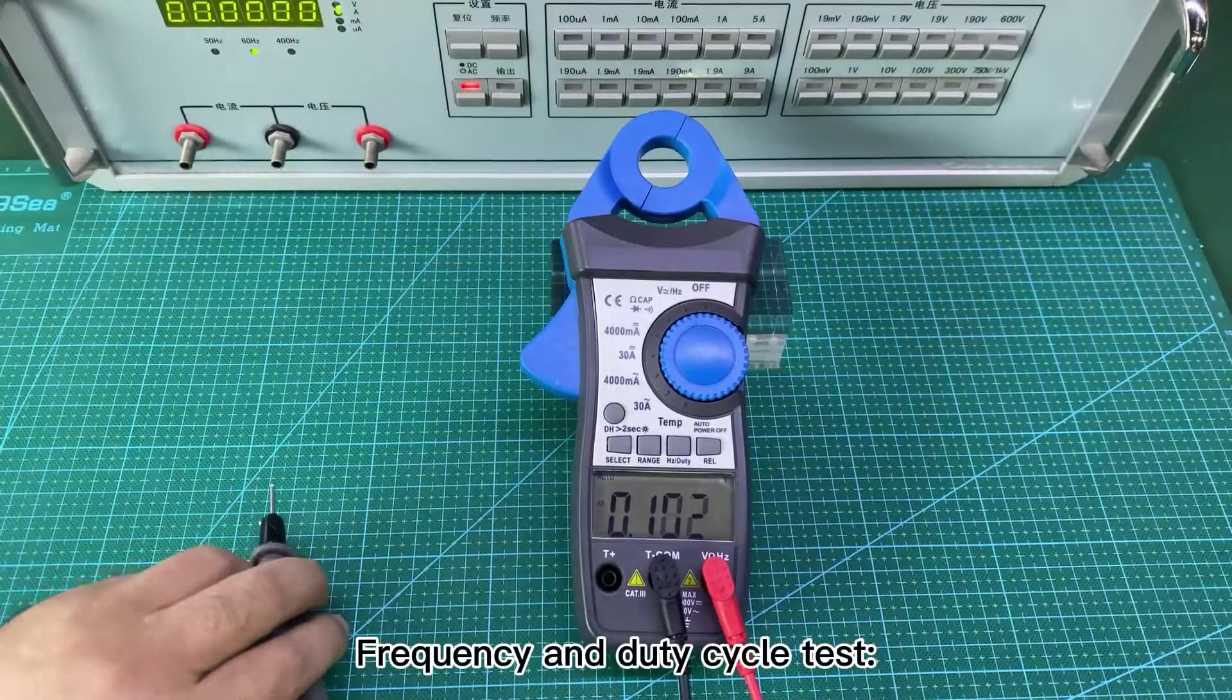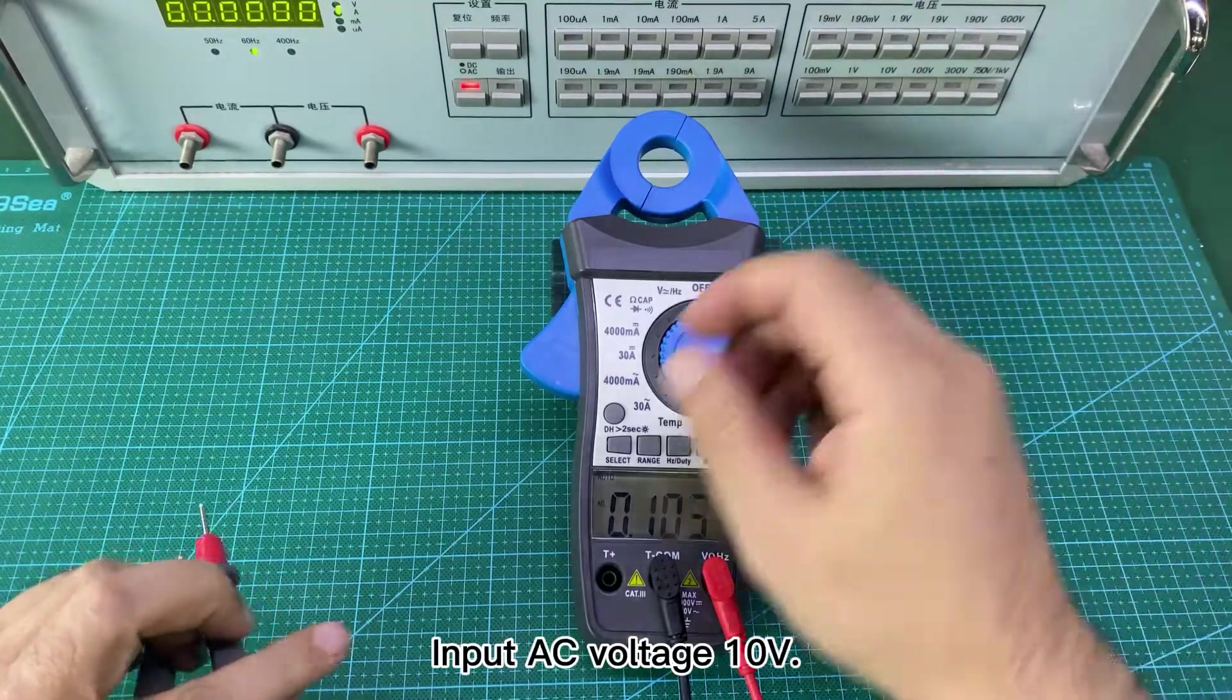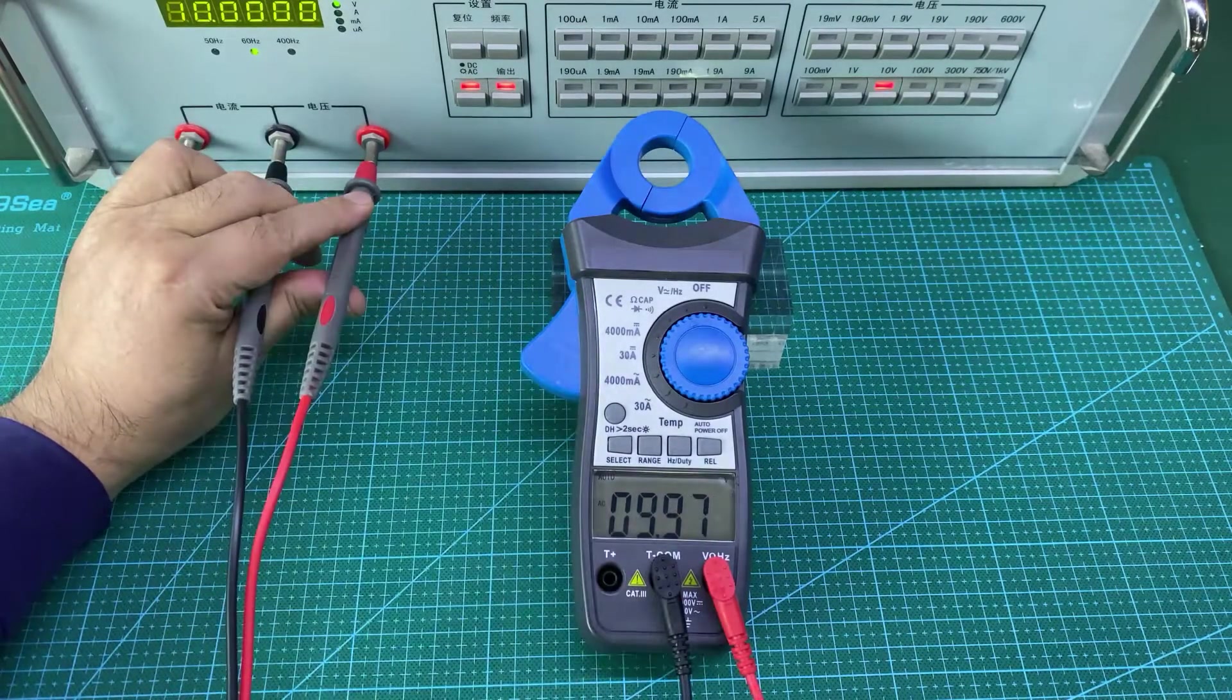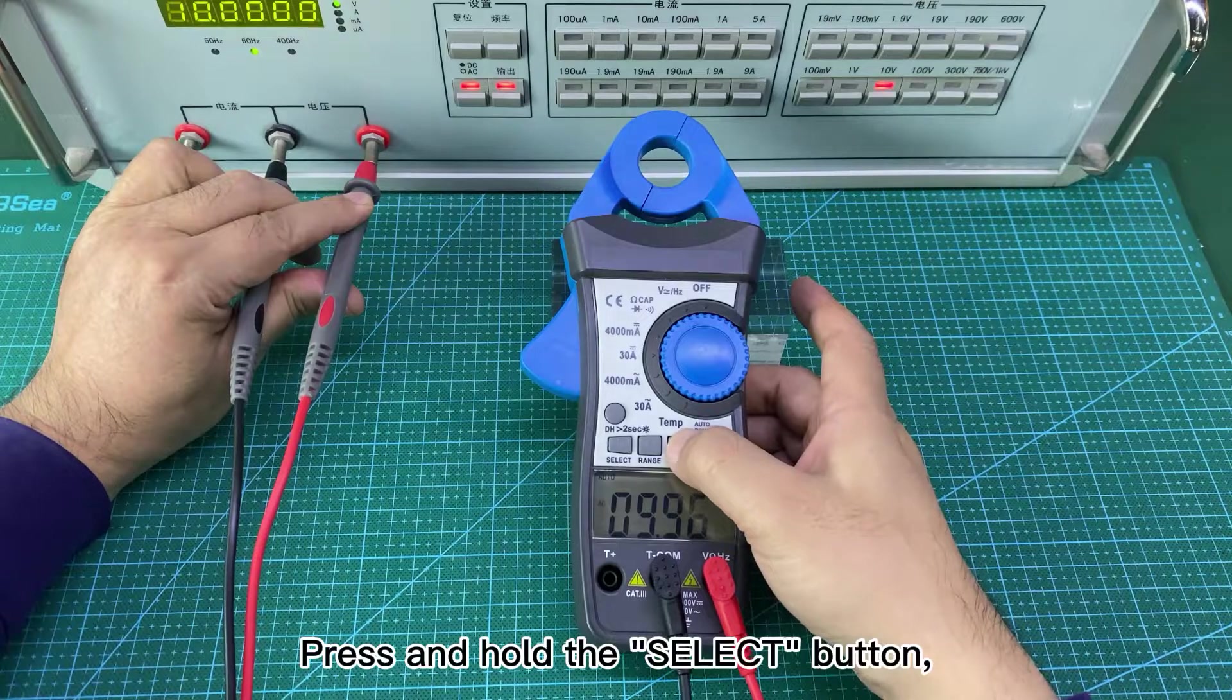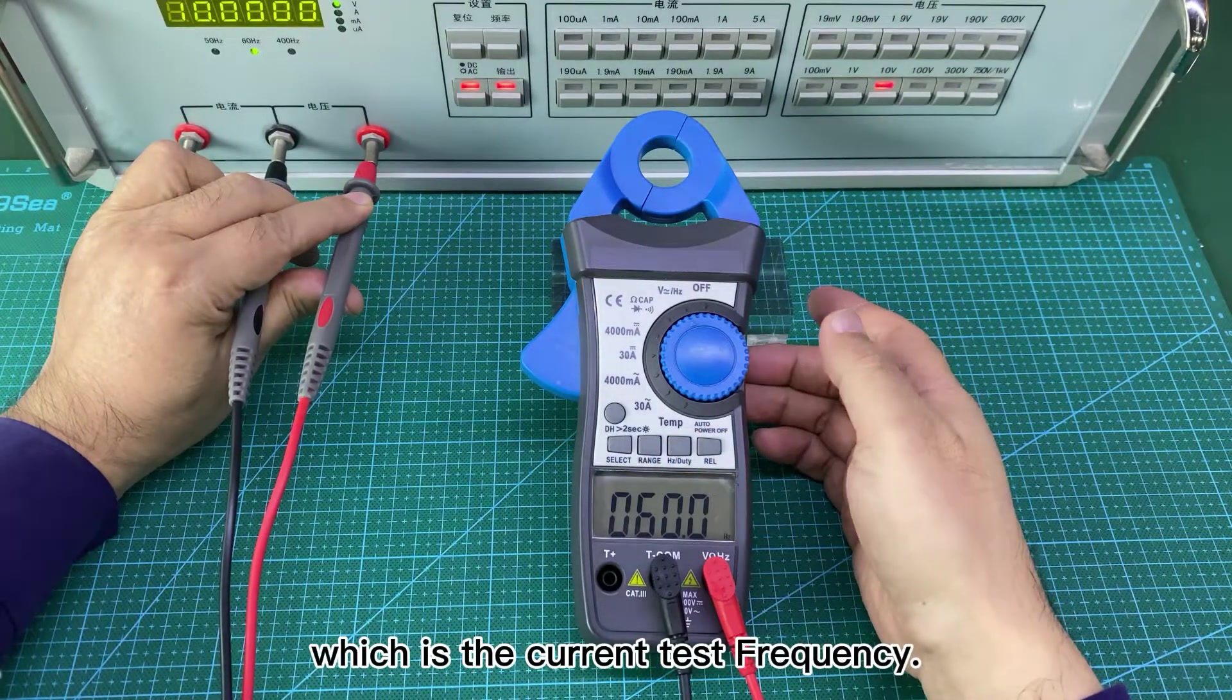Frequency and duty cycle test. Test in the voltage range. Input AC voltage 10V. Press and hold the select button. HZ appears on the LCD screen, which is the current test frequency.